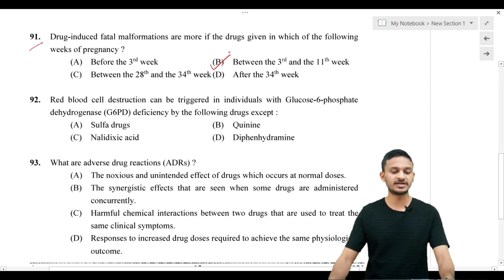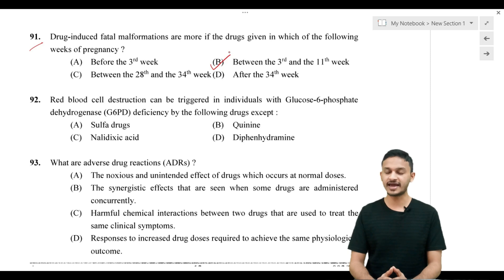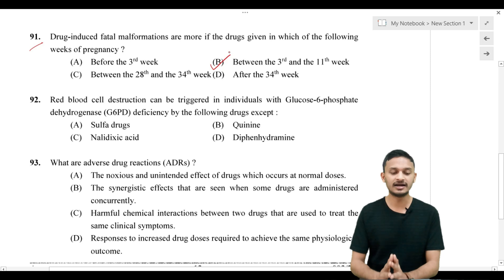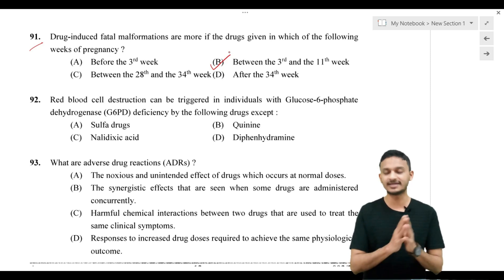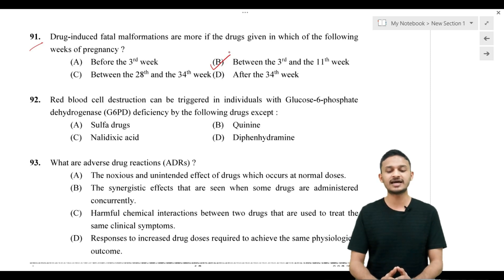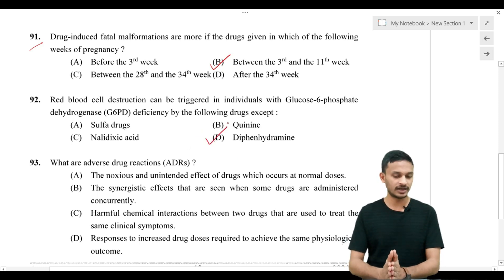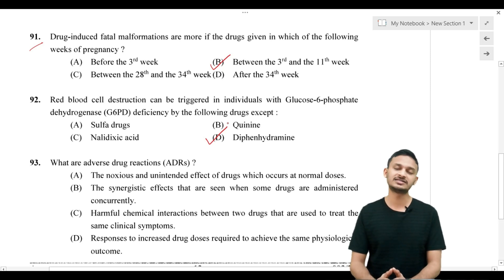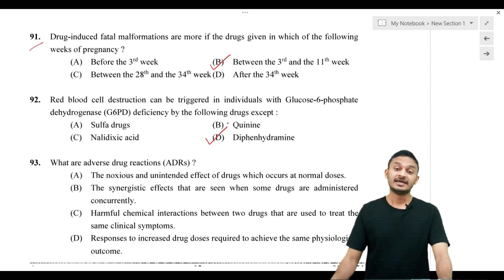This is very simple. Question number 92: red blood cell destruction can be triggered in individuals with G6PD deficiency by the following drug, except — option A sulfa drug, option B quinine, option C nalidixic acid, option D diphenhydramine. The correct answer is diphenhydramine.